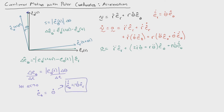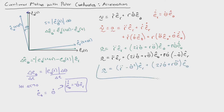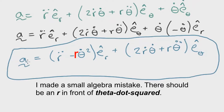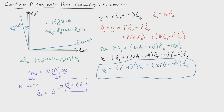We plug this value back into the acceleration equation and simplify, collecting terms for e_r and e_theta. This gives us the acceleration of a particle in polar coordinates. The radial acceleration — in the e_r direction — is r_double_dot minus r*theta_dot squared. The rotational acceleration — in the e_theta direction — is 2*r_dot*theta_dot plus r*theta_double_dot. These are the equations of motion in polar coordinates.